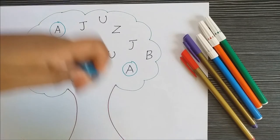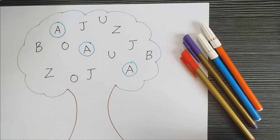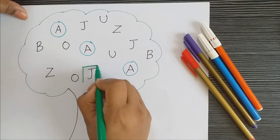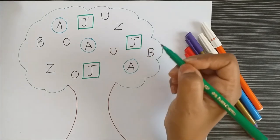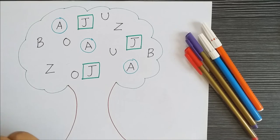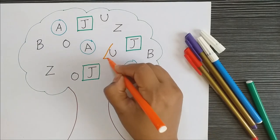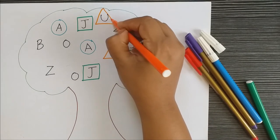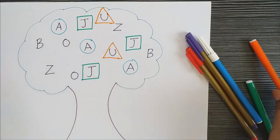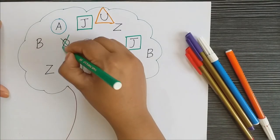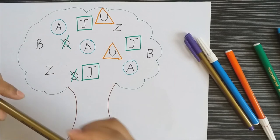The second instruction: square all the J's — put a square around J. The second one is here and the third one is here. Next, put a triangle around letter U — I'm going to take the next color and draw a triangle around U. Then, cross out the letter O — I'm going to take another color and cross out O. The next instruction is: draw a heart for B — draw a heart around letter B.